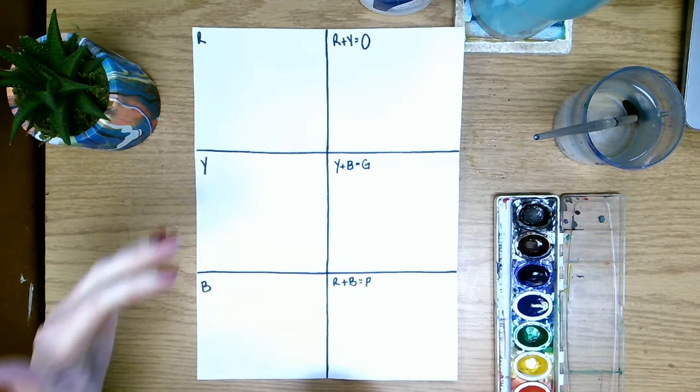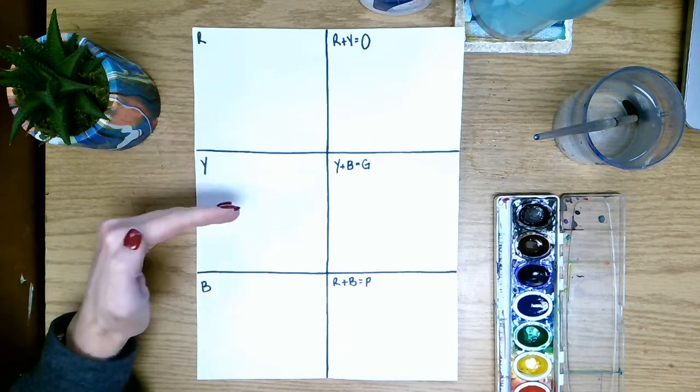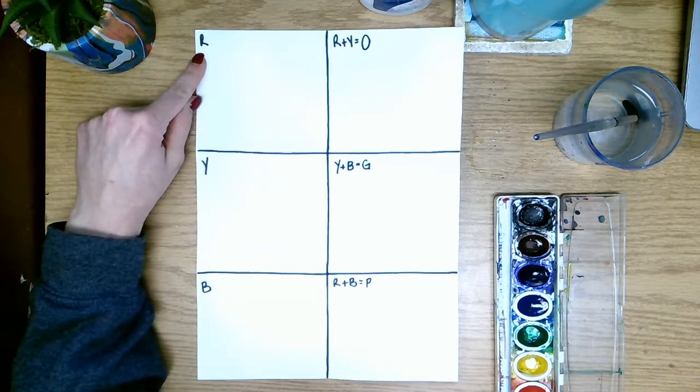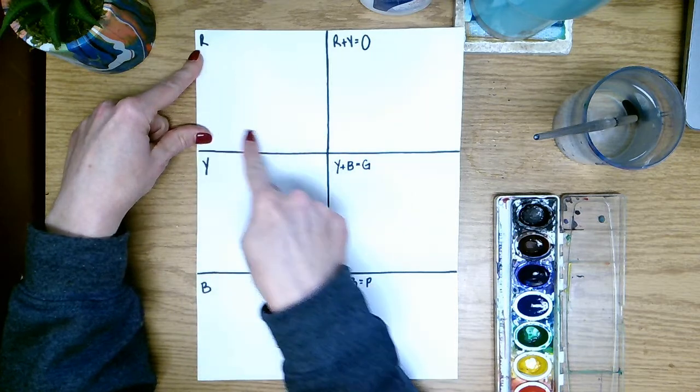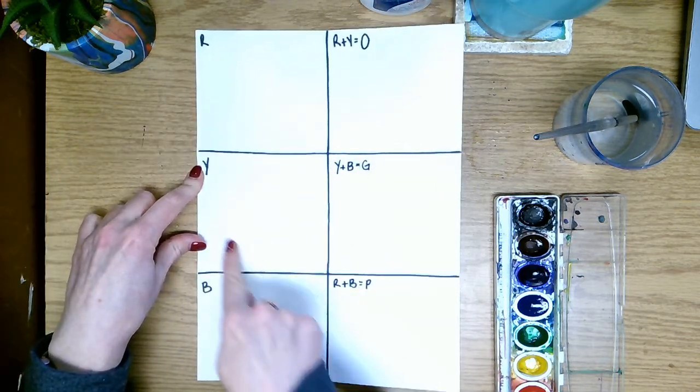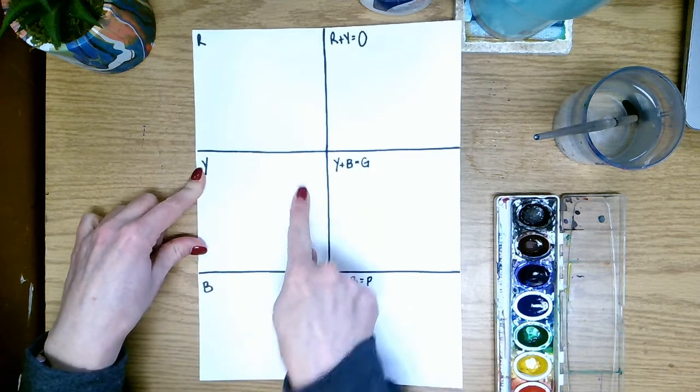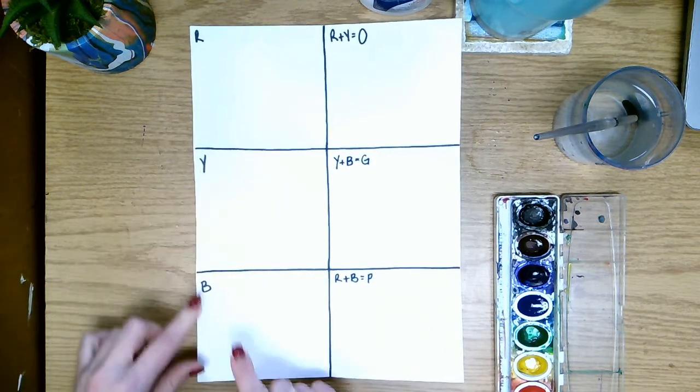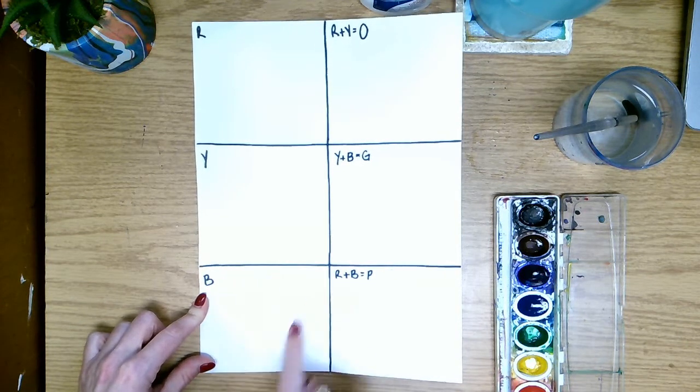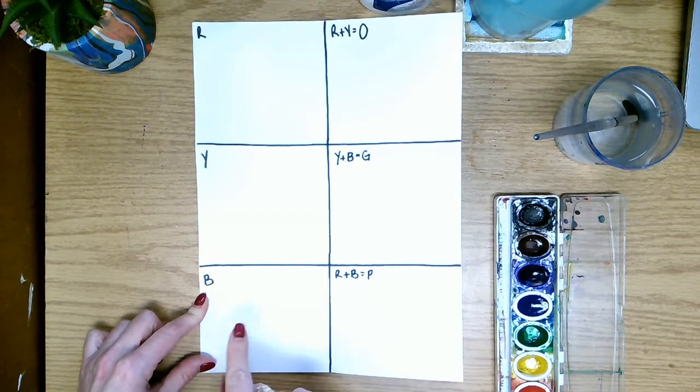So we're going to be starting with our primary colors and our primary colors are listed over here on the left hand side. So we have an R for red which means that this whole square will be just red. We have Y for yellow which means that this whole square will be just yellow. And then of course our third primary color is blue so that means that this square is going to be painted in blue.